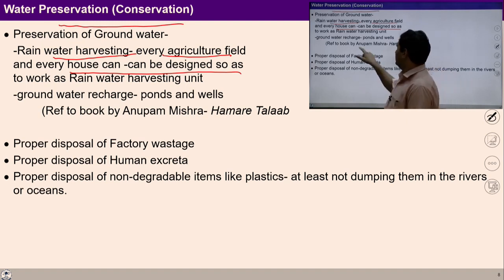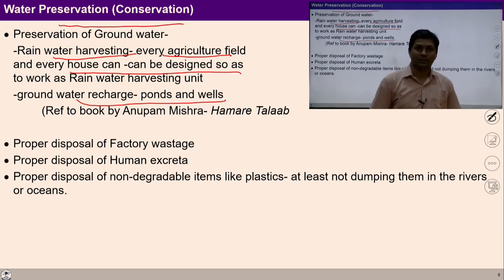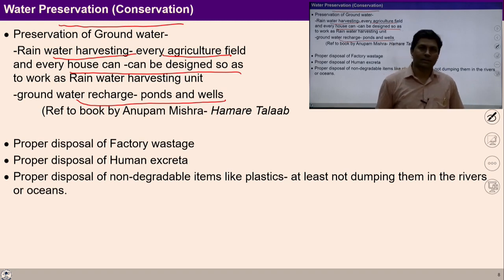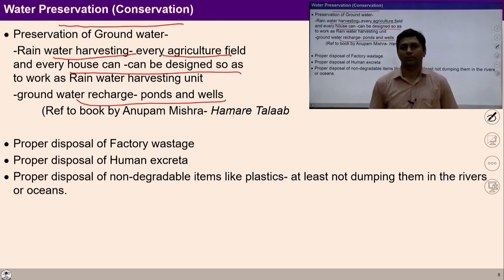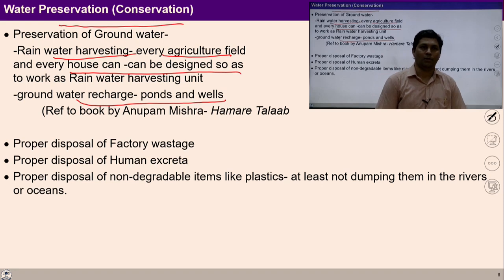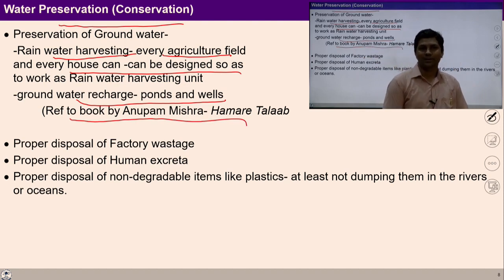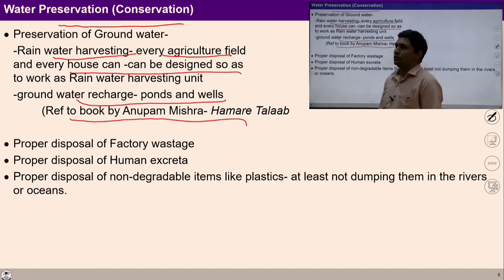For example, in the village system there were ponds and wells — a concept of ponds and wells where in every village there is a pond and there are wells which are used to conserve water. Basically, they help to recharge the ground level water. If you want to study more about this, you can refer to the book by Anupam Mishra, where he has shown the importance of these ponds and wells.